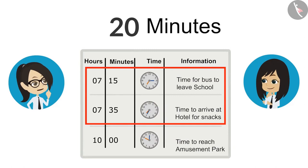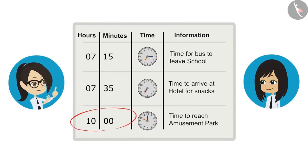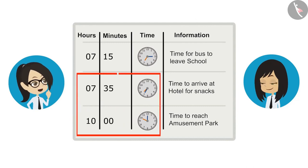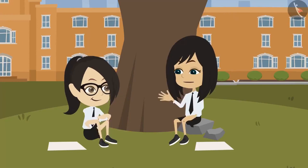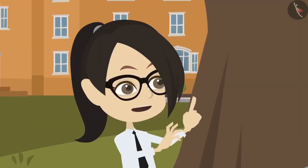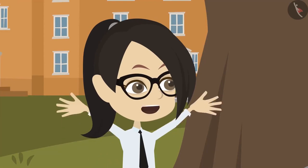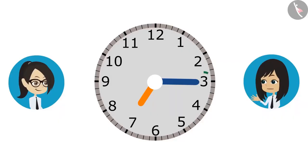This was really very easy. Now we know that we have to reach the amusement park at 10 o'clock. If we also know how long it takes to go from the hotel to the amusement park, then we will be able to tell at what time we should leave the hotel. Sir has said it takes 55 minutes from hotel to reach the amusement park. Let's draw 10 on the clock and then rewind the minute hand 55 minutes behind.